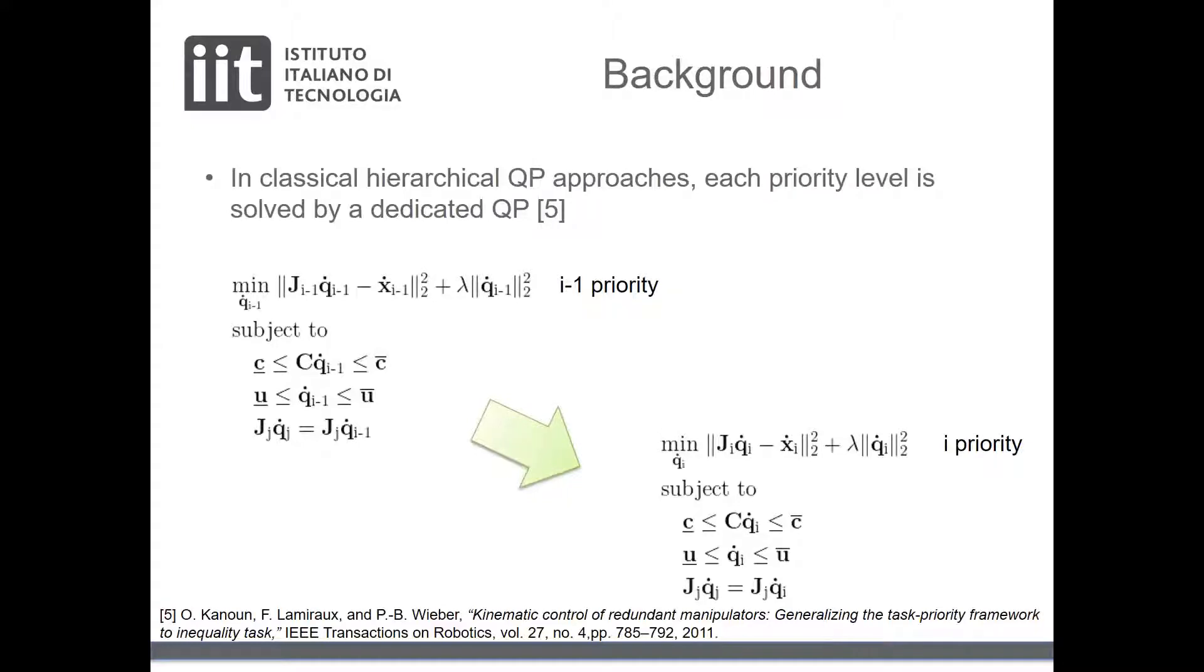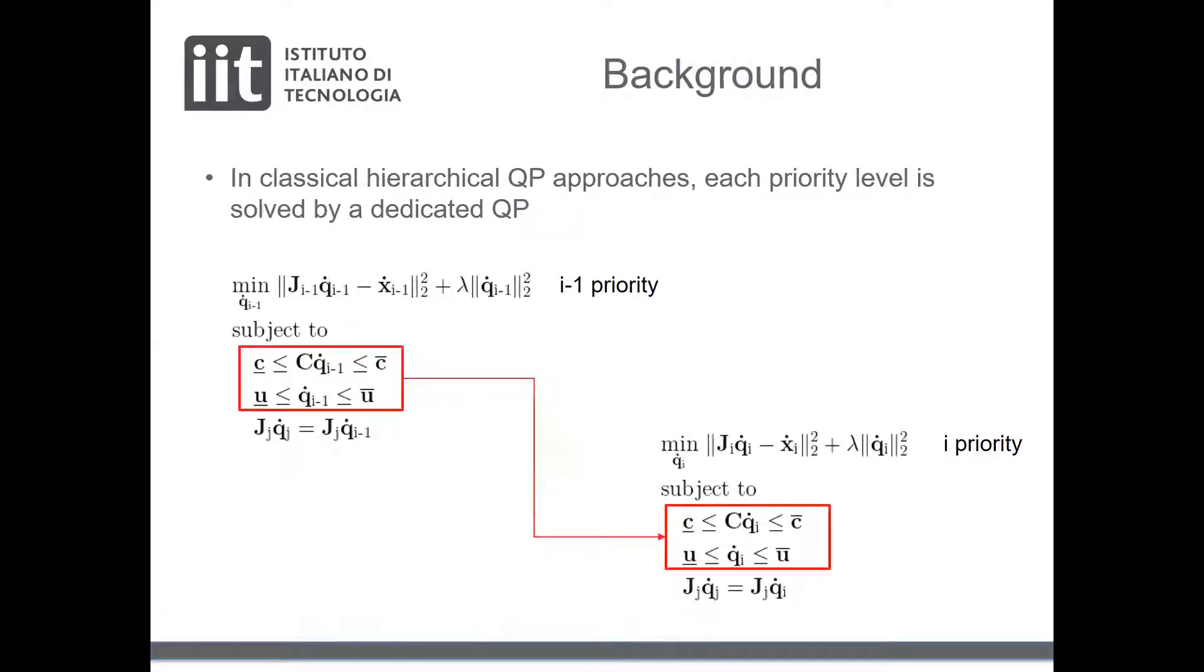Let's first briefly recap classical hierarchical QP inverse kinematics. Normally, a set of prioritized tasks is optimized employing quadratic optimization. In particular, a simple method consists in setting up a QP problem for each priority level. Each QP is subject to various constraints and the optimality of the highest priority tasks.